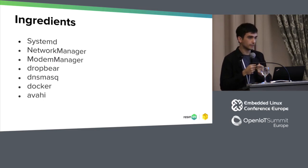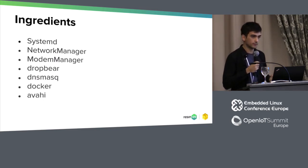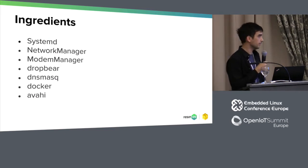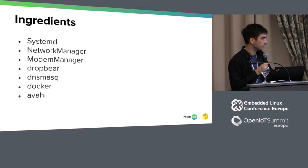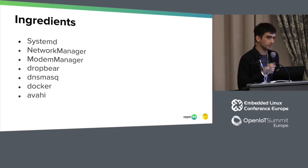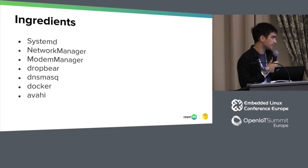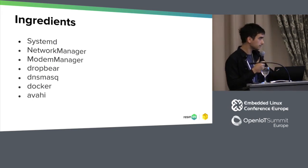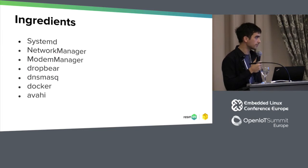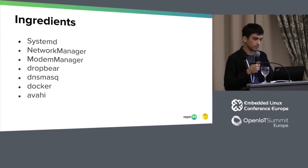The list of ingredients includes: systemd, NetworkManager, and ModemManager for networking, ModemManager for 3G support, Dropbear for SSH, dnsmasq for handling DNS, Docker for containers, and Avahi for the development tools.